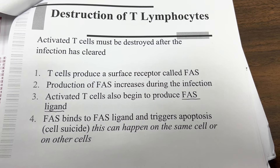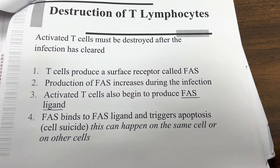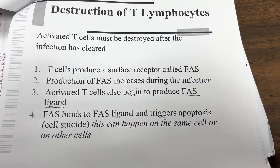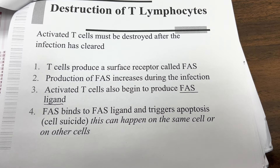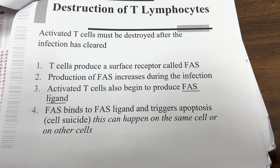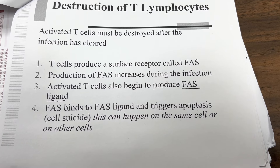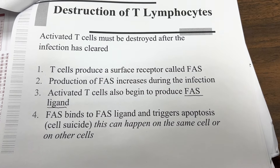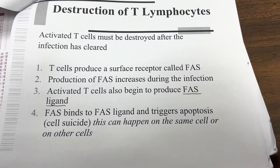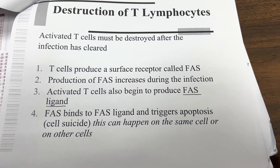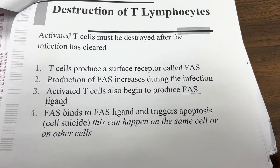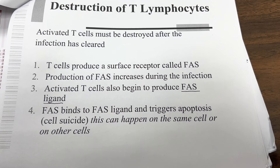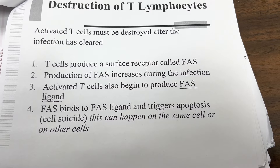Destruction of T lymphocytes: activated T cells must be destroyed after infection has cleared. T cells produce a surface receptor called FAS, and production of FAS increases during infection. Activated T cells also begin to produce FAS ligand. FAS binds to FAS ligand and triggers apoptosis — cell suicide. This can happen on the same cell or on other cells.